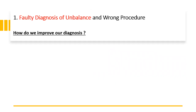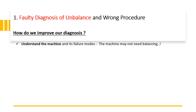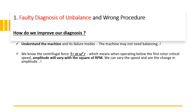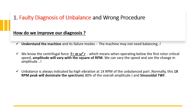To improve diagnosis, first understand the machine and its failure modes — whether it has material deposits or wear on the rotor. Second, know that centrifugal force equals m·ω²·r, meaning amplitude varies with the square of RPM — varying speed and observing amplitude change helps confirm unbalance. Third, the classic spectral indication is a high 1x RPM peak, normally 80% of overall amplitude, accompanied by a sinusoidal time waveform.